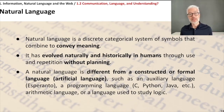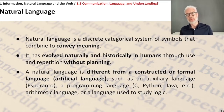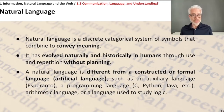Examples of artificial languages include auxiliary languages like Esperanto, constructed languages like Klingon from Star Trek, programming languages like C, Python, or Java, and arithmetic or logic languages like description logics or first-order logic. Natural languages are languages like English, German, French, or any other such language.